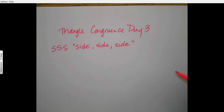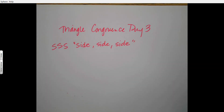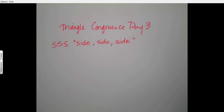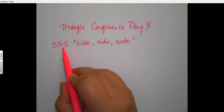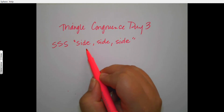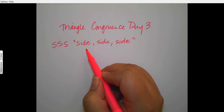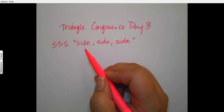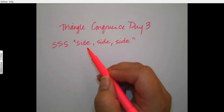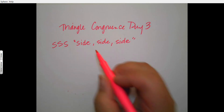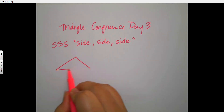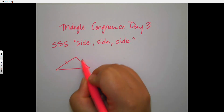The first is what we call SSS, or side-side-side, which means all three sides are congruent, which means the two triangles are exactly congruent — they're exactly the same. You will see something like this where you see a triangle with hash marks one, two, and three.